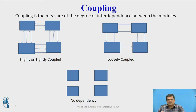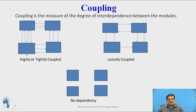Coupling is mainly dependent on three things: one is the number of interfaces, second is the complexity of the interfaces, and third is the type of data being exchanged between the two modules. Where there is no interface, there is no coupling. Where modules have fewer interfaces and are exchanging only simple data, the modules are loosely coupled. Where too many interfaces exist between two modules, indicating high dependency, and they are also exchanging data as well as control information, the modules are highly or tightly coupled — or you may say they are interconnected with strong coupling.